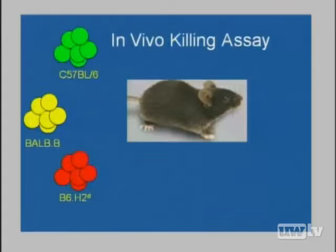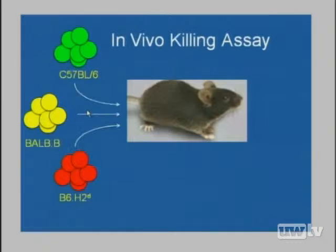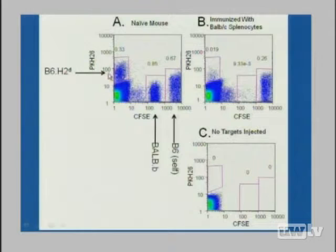To test whether there's actually an immunological response, we do what we call an in vivo killing assay. We take three different target populations and label them in three different colors: the mouse's own cells as a control, and then target cells that are either BALB/b or B6-H2D to isolate the major HLA component. We mix them together, transfuse them into the mouse through the tail vein, wait 16 hours, recover them from the spleen, and look at their survival rates.